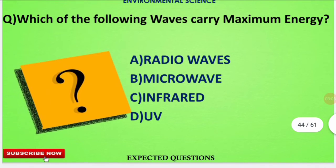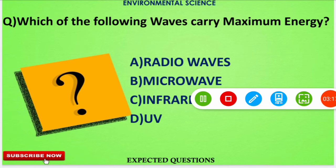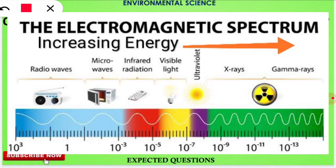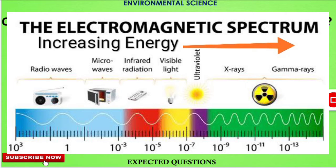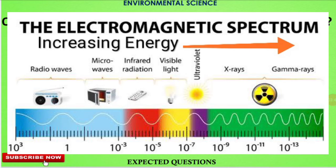The next question is: among the following waves, which wave carries the maximum energy? The correct option is option number D, that is UV rays. The ultraviolet rays carry the maximum energy among the four options. The wavelength of UV rays is least compared to the others, while the frequency is highest — that's why they carry maximum energy.